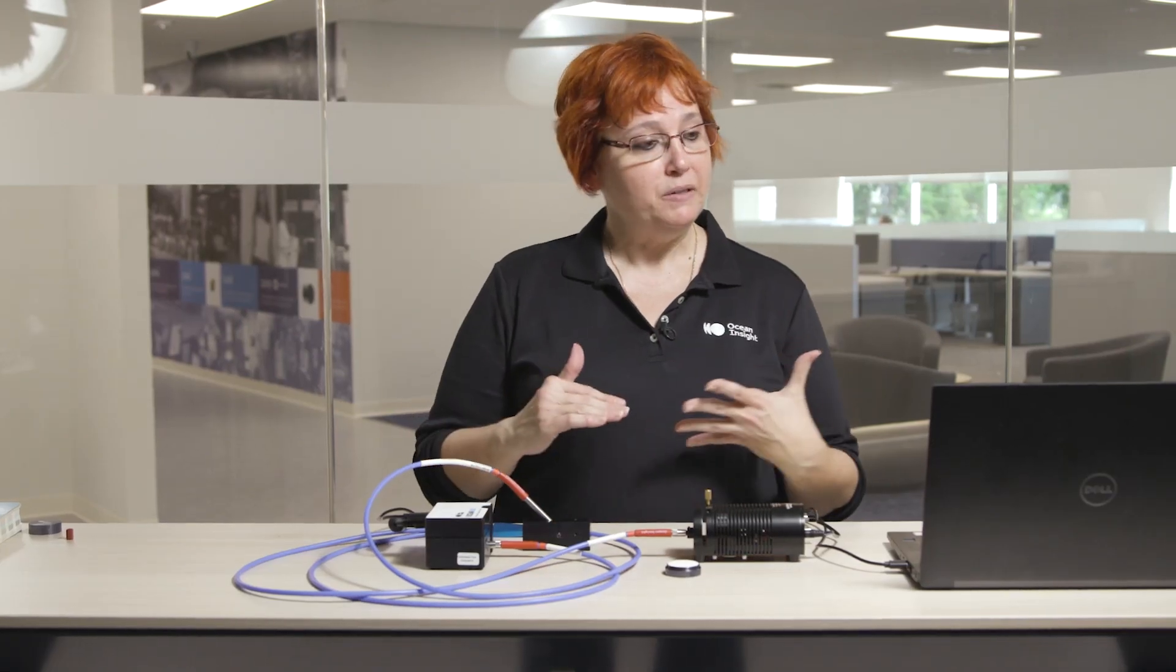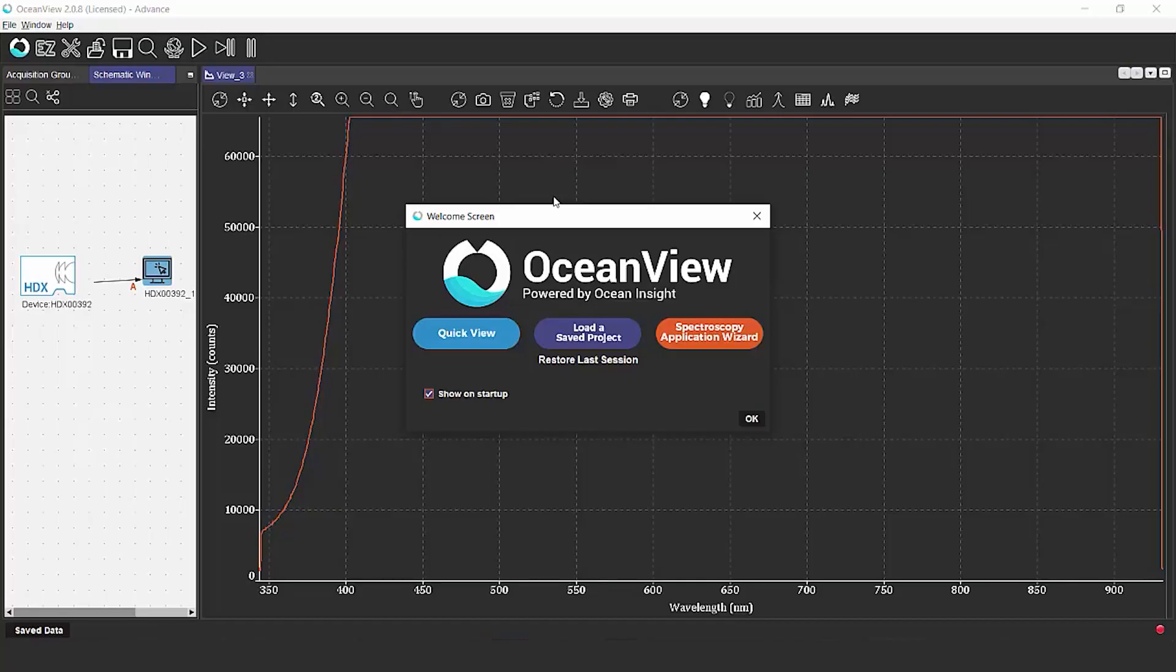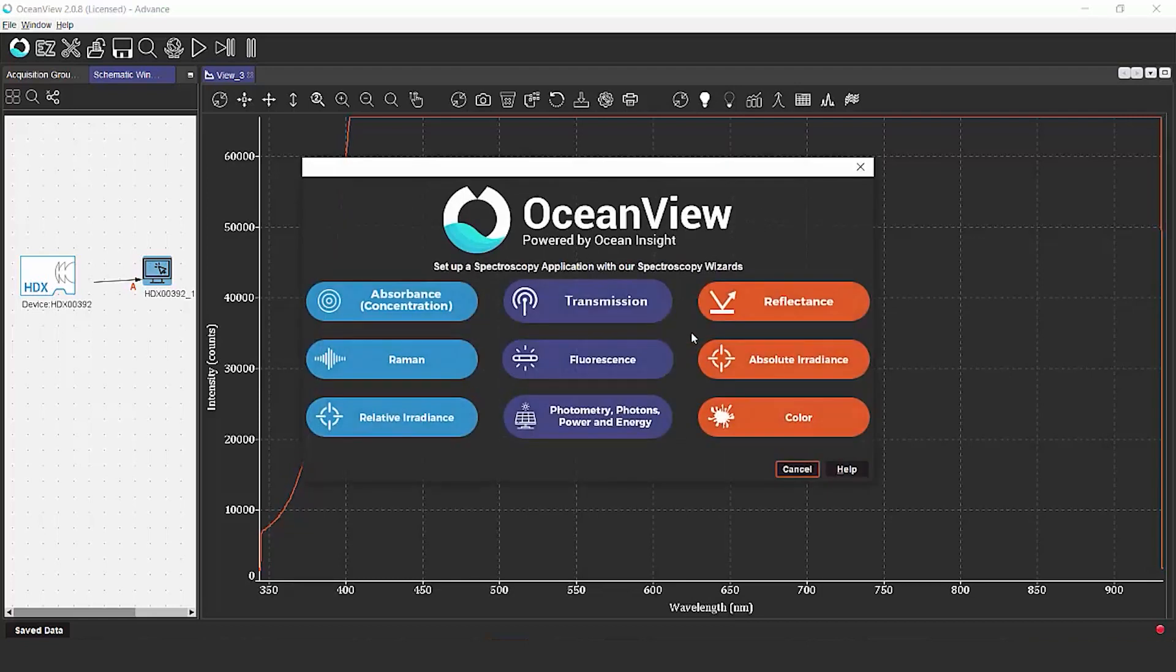So the next step is going to be to start our OceanView software. You're going to go to spectroscopy application wizard to find the reflectance wizard, which will help you get your setup into reflectance mode.